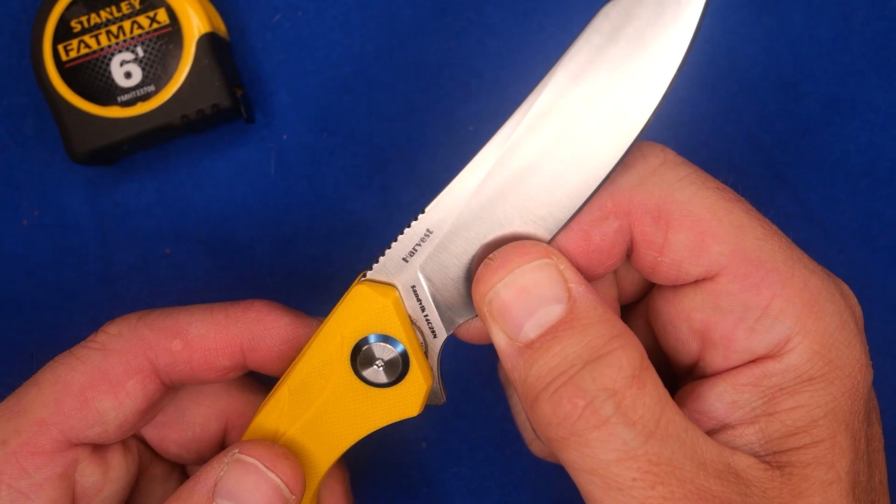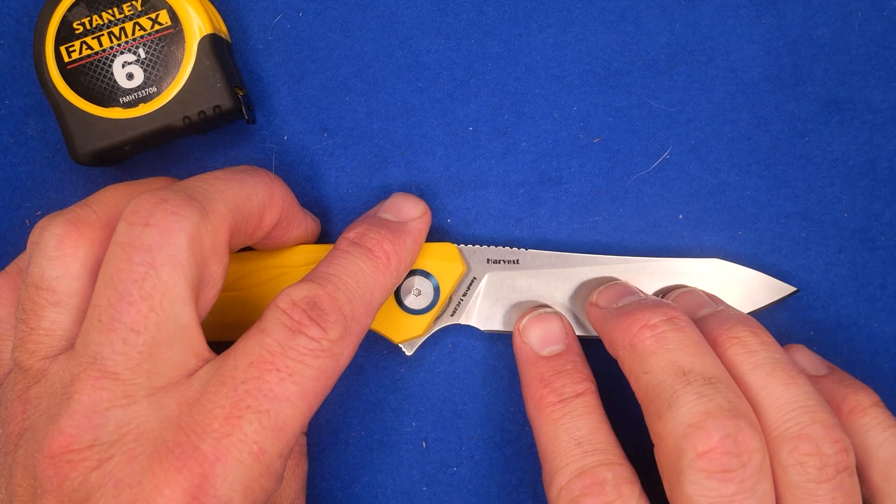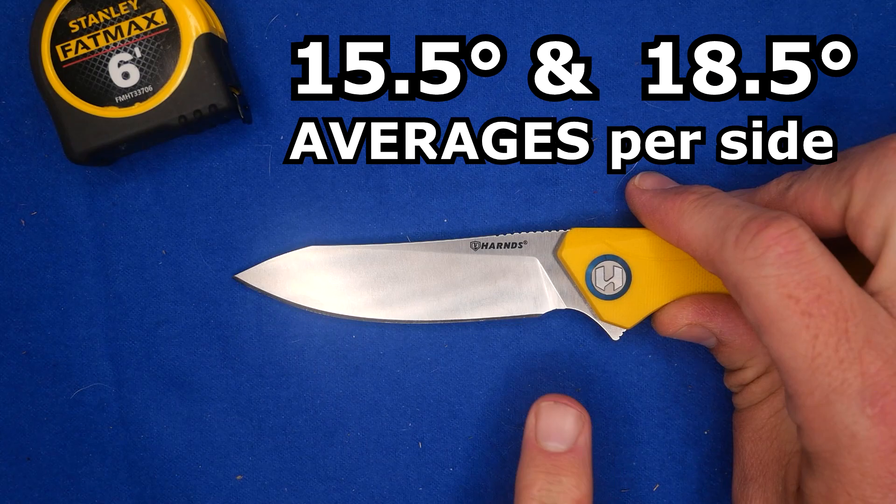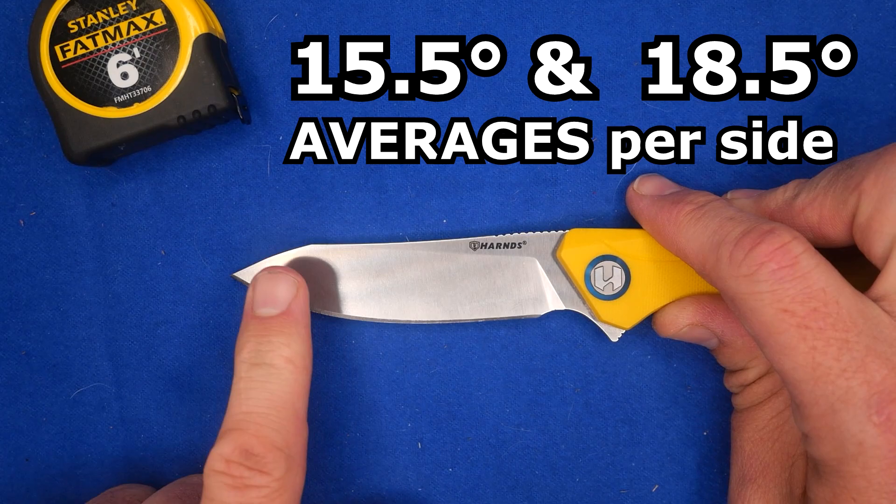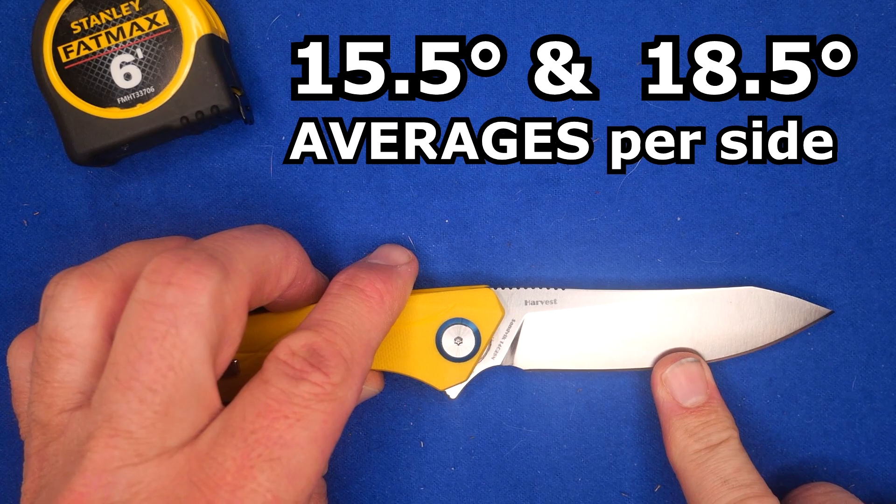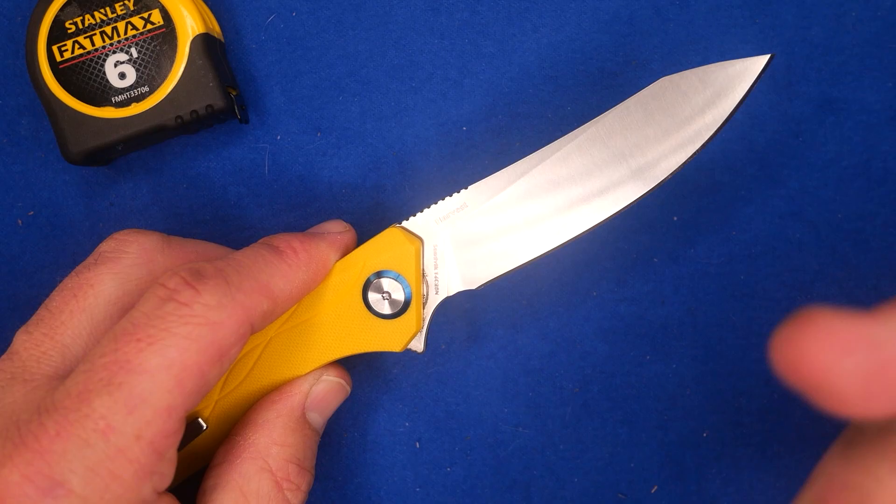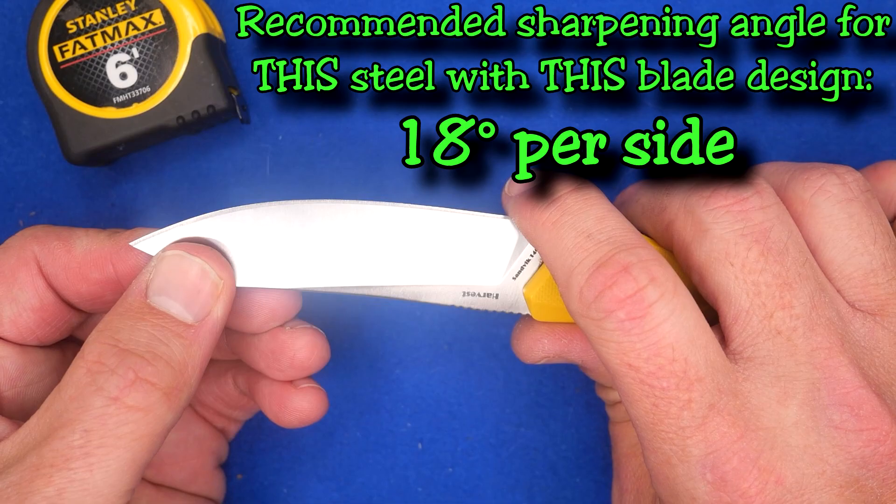The grind angles: this side averages out to about 18 and a half, this side averages out to 15 and a half. It starts off at 16.1, goes to 14.2 close to the middle, and 16.4 at the end. And this side starts at 18, 18.1, 19.5. 14C28N has good hardness, good corrosion resistance, good durability, good edge retention. I'd probably sharpen this to 18 degrees a side.